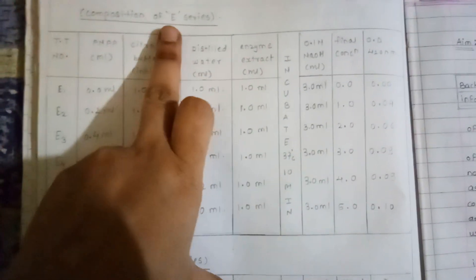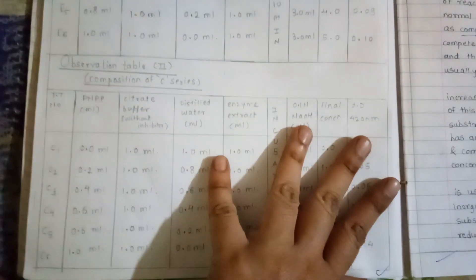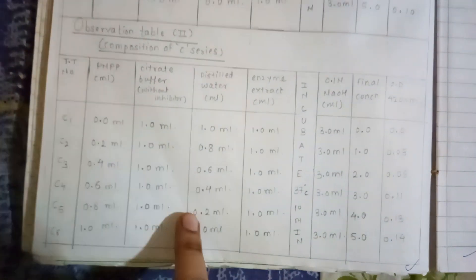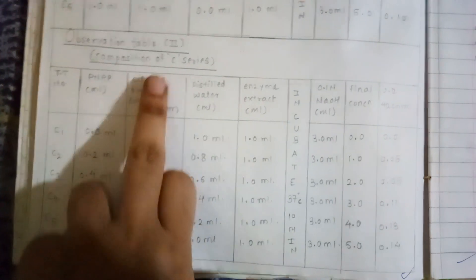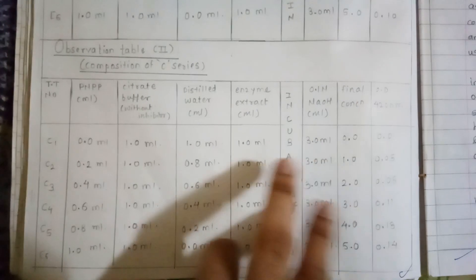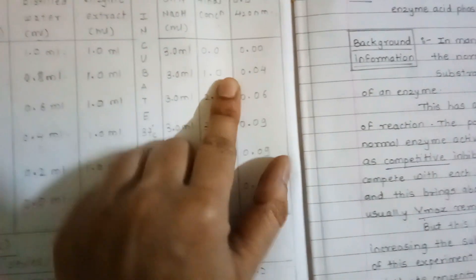In the experimental series, we added inhibitor into the buffer. In the control series, the only difference is that the citrate buffer is without any inhibitor. So control is without inhibitor and the experimental series is with inhibitor — that is the only difference. All other components — PNPP, distilled water, enzyme extract, and NaOH — are the same in both series. We will get two sets of OD values: OD with inhibitor and OD without inhibitor.